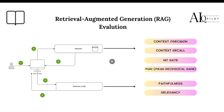Before we go into the details of RAG evaluation, let's talk about what RAG is and why we are using it. RAG is a powerful model that combines two essential components named as Retriever and Generator, and this system can benefit Generative AI applications from different perspectives. RAG can enable more contextual understanding for the application.